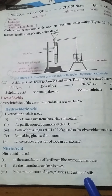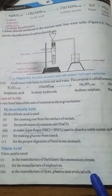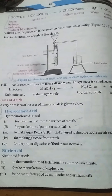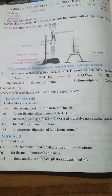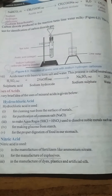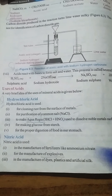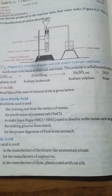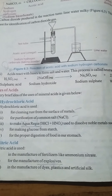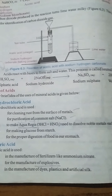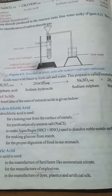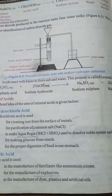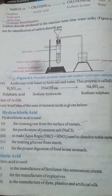Nitric acid is also used to manufacture dyes, paints, and plastics, and artificial silk. Natural silk is made by the silkworm, while artificial silk is made using nitric acid. Nitric acid is also used to make designs on metals such as copper or brass utensils.